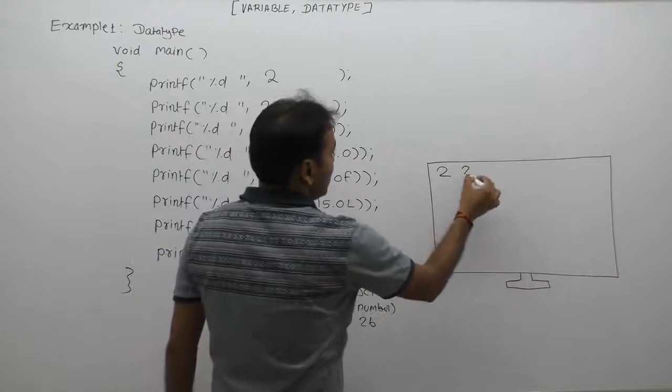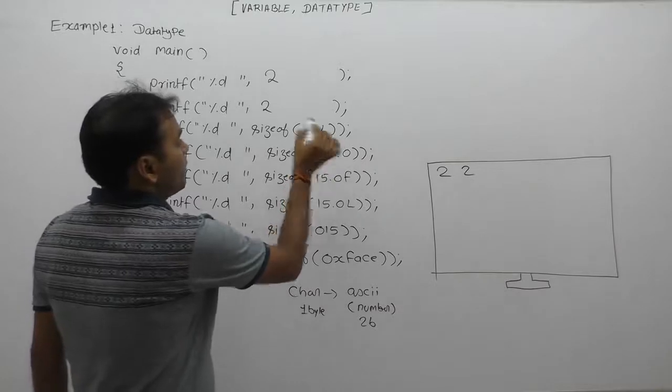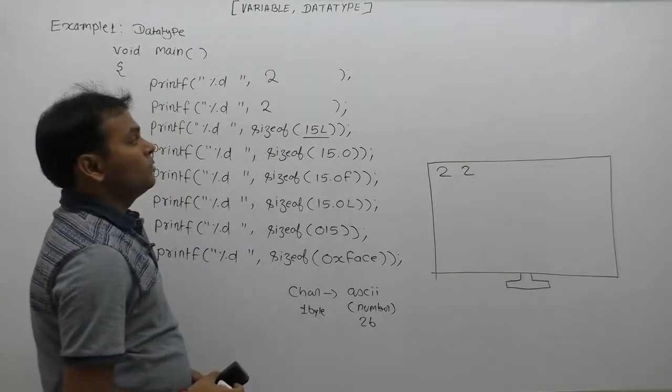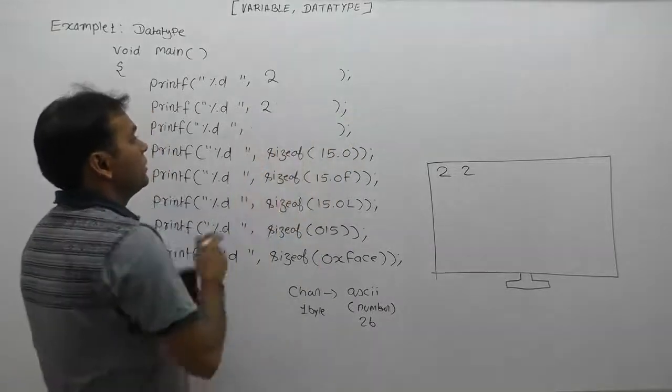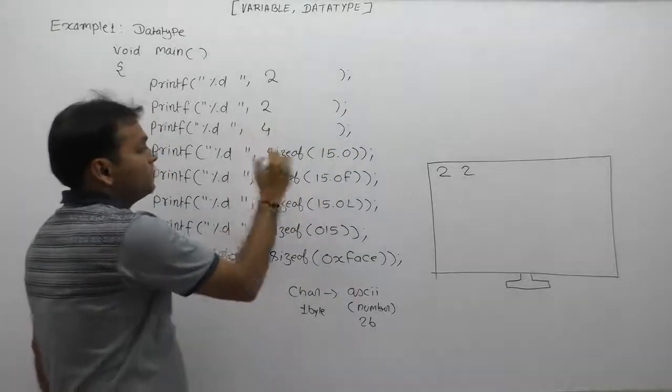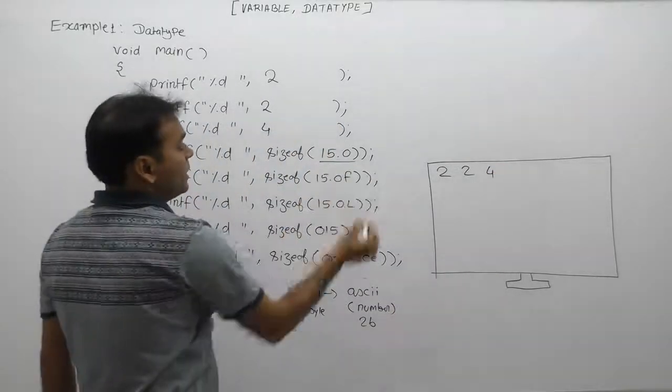Next, we are using a long value or integer long. As we know, long will take 4 bytes, therefore the size of long will be printed by this printf function is 4 bytes.